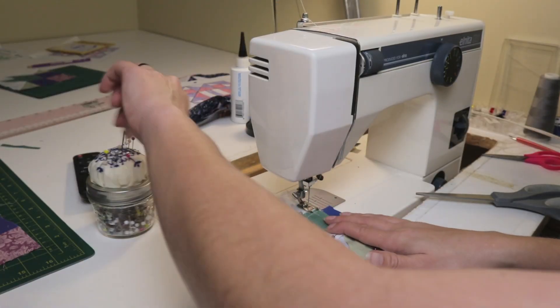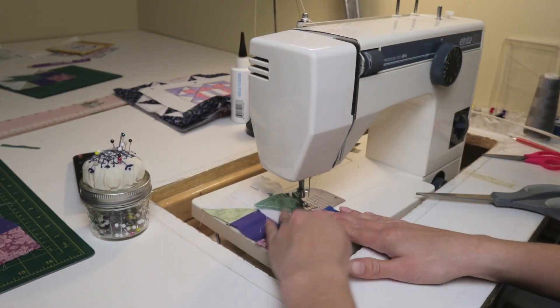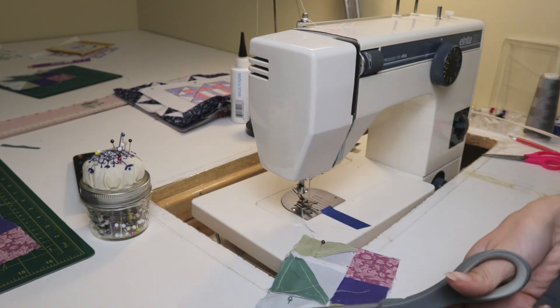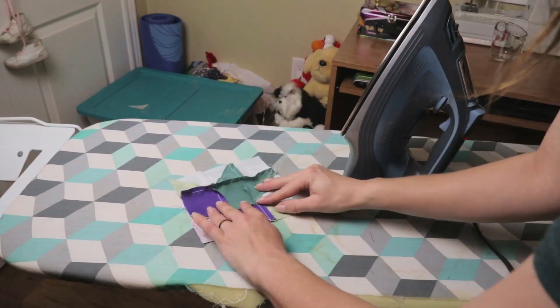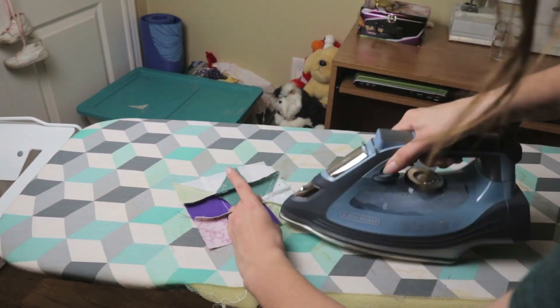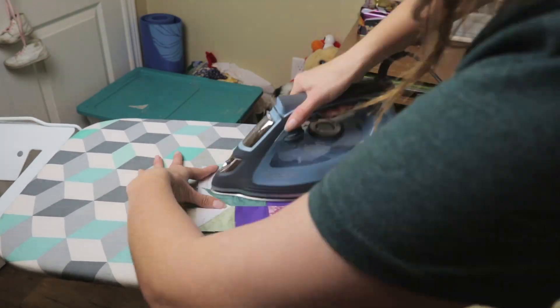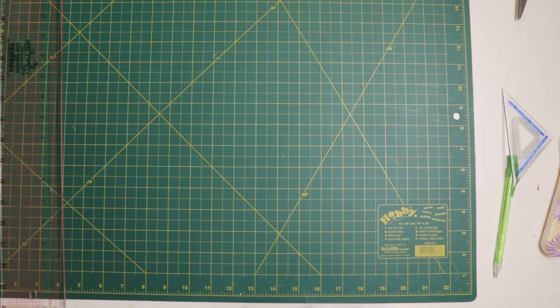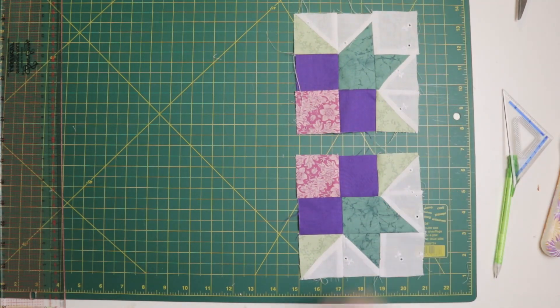Once I get that final seam sewn, my corner square is done and just needs a press to get the seams laying nicely. I completed that entire process of making the flowers three more times to give me all four corners I needed for the final block.